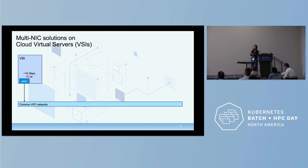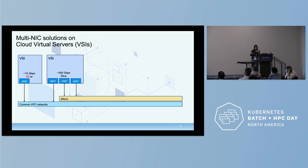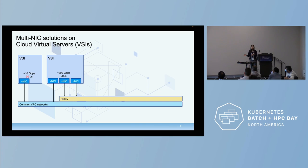This is the situation we have initially on our virtual servers — VSI stands for virtual server instance on the cloud. We usually have a single primary NIC making connections on the common VPC, or virtual private cloud. To make our networks more supportive for HPC and AI workloads, we get machines with the support of SR-IOV so that we can bypass the layers of the hypervisor, enabling almost full bandwidth on the virtual instance.